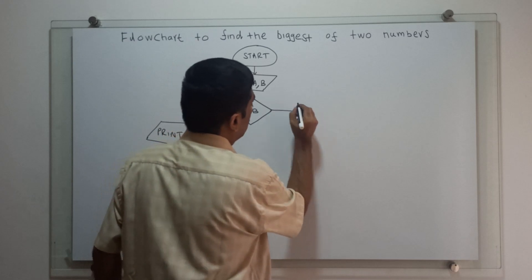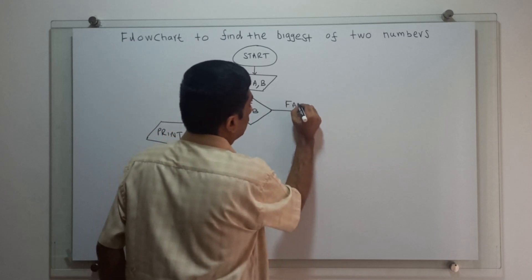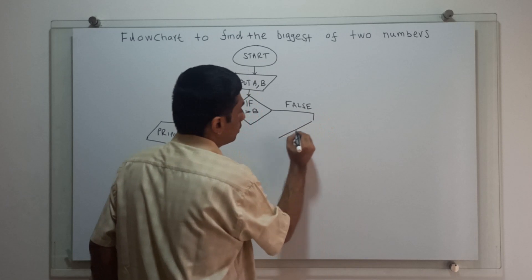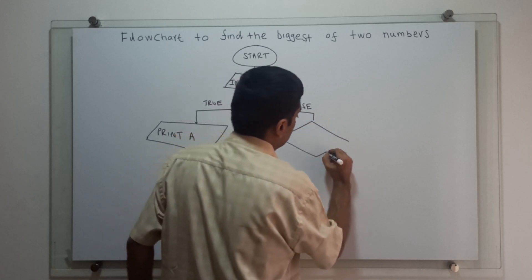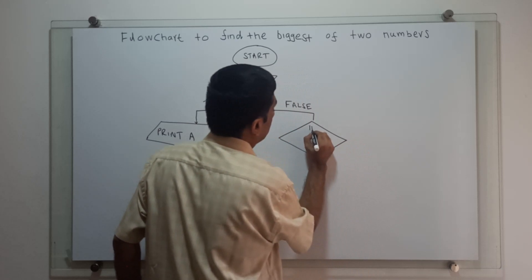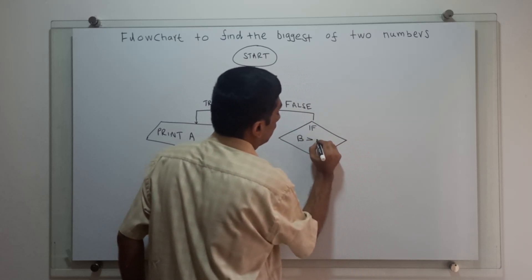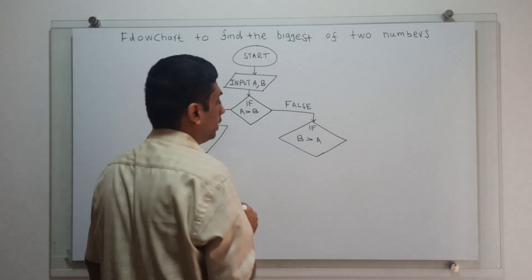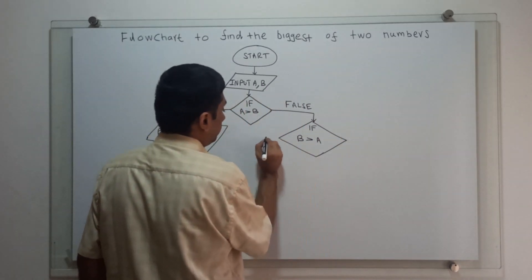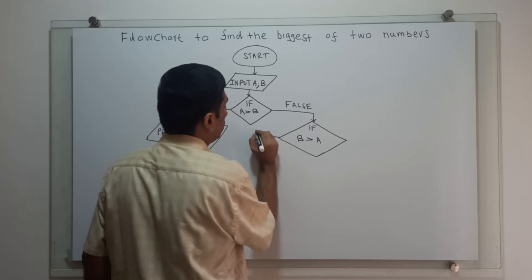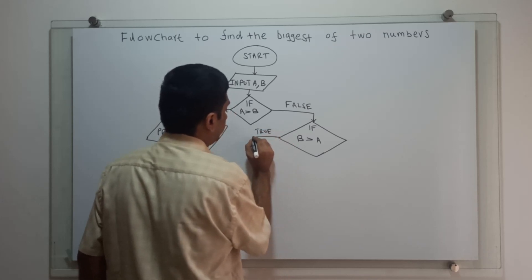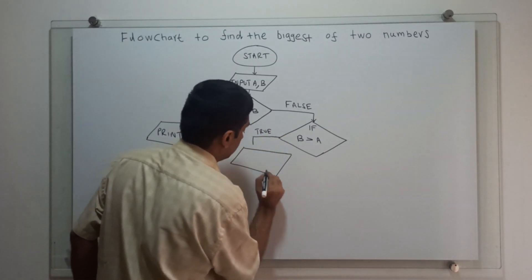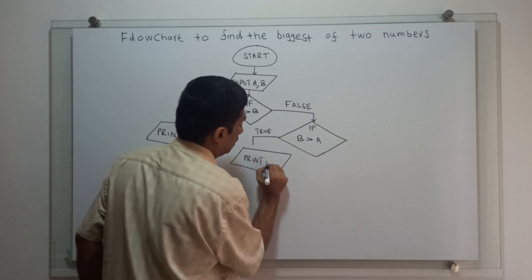If it is false, I am again checking if B is greater than A. If it is true, I am printing B.